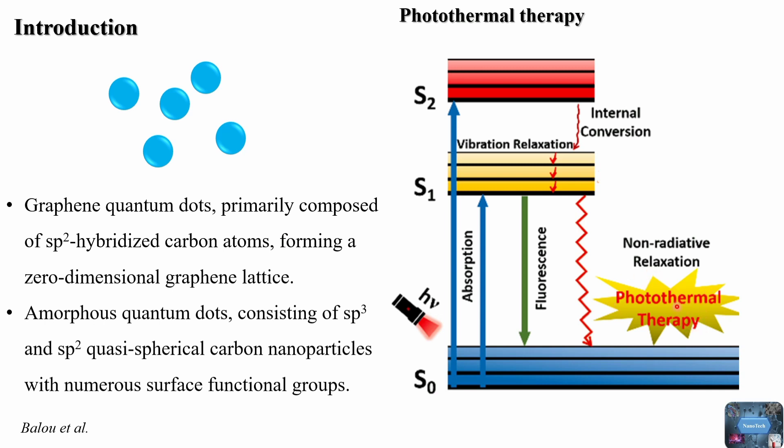The interesting thing is that these electrons can also release their energy in a different way. Instead of emitting light, they can cause small vibrations at the molecular level due to their interactions with the surrounding atoms. These vibrations result in the generation of heat, and when you have lots of carbon dots together, this heat can become quite significant on a macroscopic scale. Thus, carbon dots can serve as an alternative to metallic-based, semiconductor, and polymer-based photothermal nanomaterials.